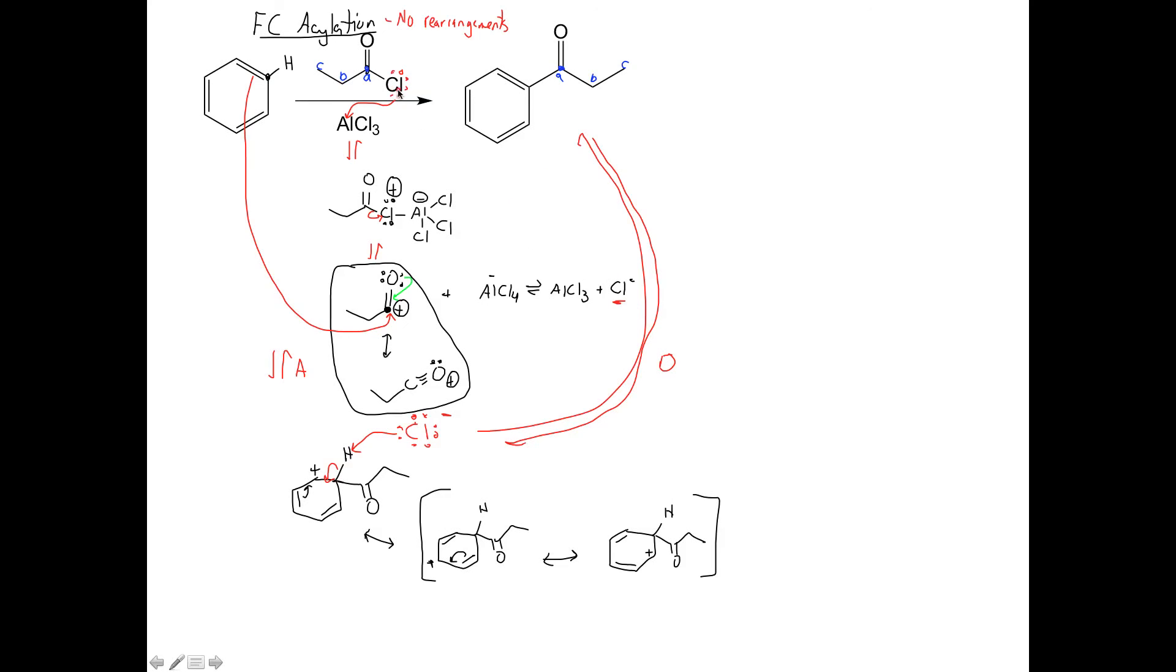So again, to review, the lone pair on the chlorine attacks the aluminum, forms a new bond here. We have a positive charge on our chlorine, negative charge on our aluminum. This carbon-chlorine bond breaks, becomes a lone pair on the chlorine. Here we get our positive charge here, which is resonance stabilized, why we have no rearrangements. We also form AlCl4, which can dissociate to AlCl3 and Cl minus. That's part one of the mechanism.